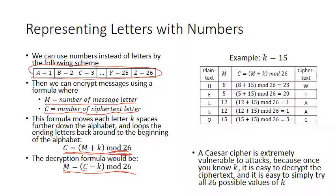Let's look at this example where K is equal to 15, so we're sliding each letter 15 spaces down the alphabet. You split your plain text message into five letters. Then you represent each of those letters with its number in the alphabet. H is the eighth letter, E is the fifth letter, L is the twelfth letter, and O is the fifteenth letter.